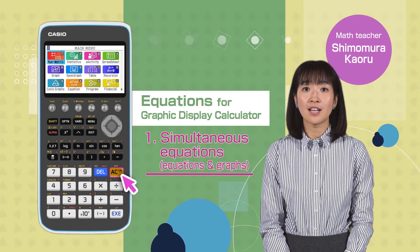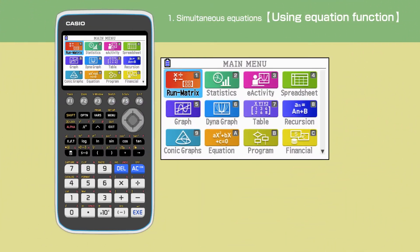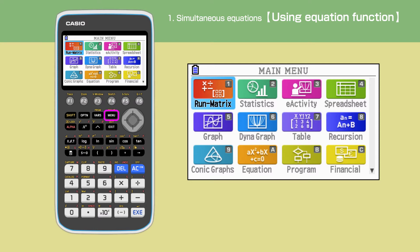Switch on your calculator, pressing AC button. Press the menu button to open the main menu, then move the cursor, or press A to select the equation function.